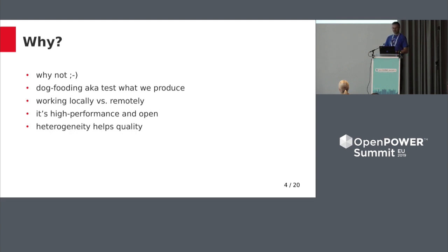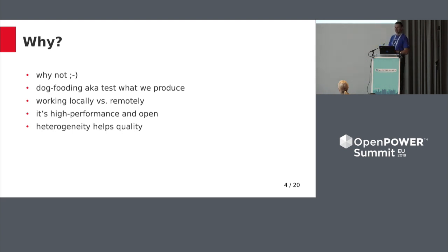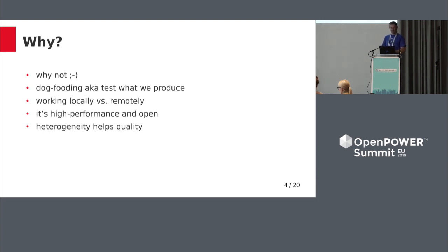Thanks to the openness, security- or privacy-sensitive people can inspect everything, do some auditing, and know what they are running on their system. Also, a heterogeneous environment usually helps increase quality because some issues can only be discovered when running on another platform, since not all of them behave the same. I will show you an example that really makes sense and is able to discover real problems in the source code.